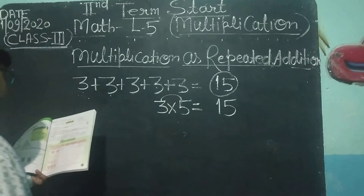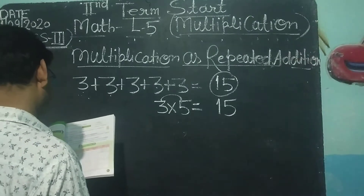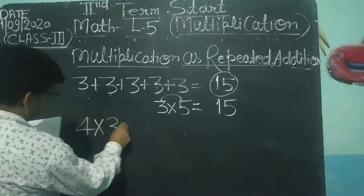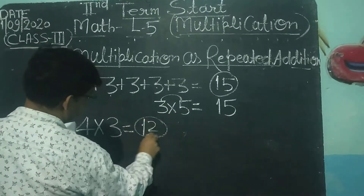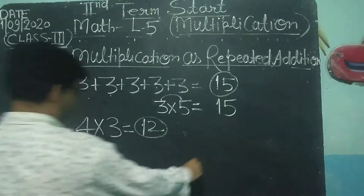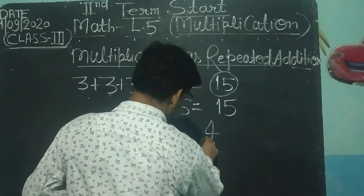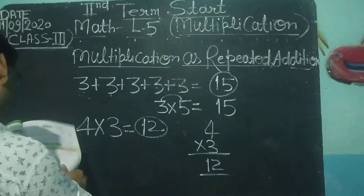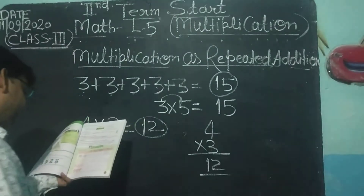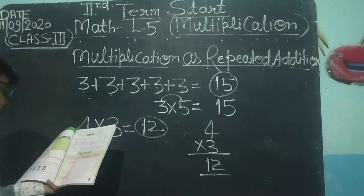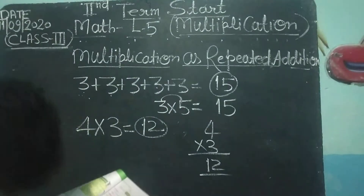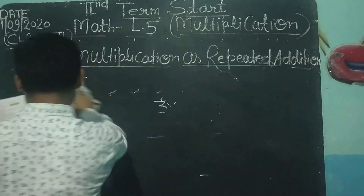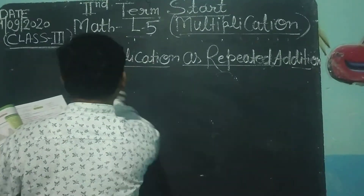और direct multiplying: दो numbers को यदि हम multiply कर देंगे, जैसे 4 × 3 = 12, तो यह multiplication कहलाएगा। यदि हम इसको vertical करके करें — vertical 4 × 3 = 12 — तो इसमें जो table बनी हुई है उसमें कुछ सवाल दिये हुए हैं, उन सवालों को कैसे करेंगे यह मैं आपको बताता हूँ।